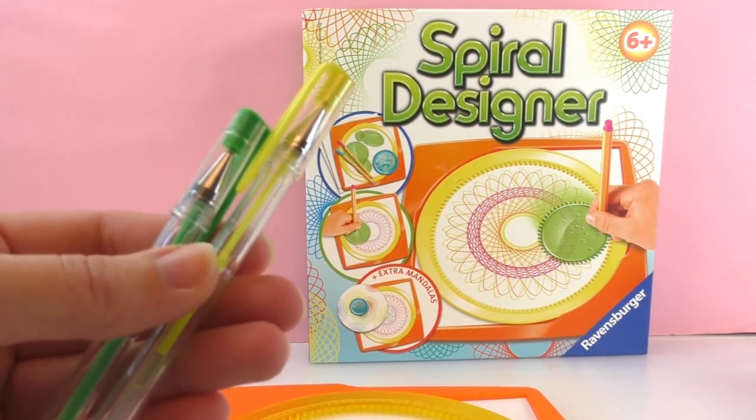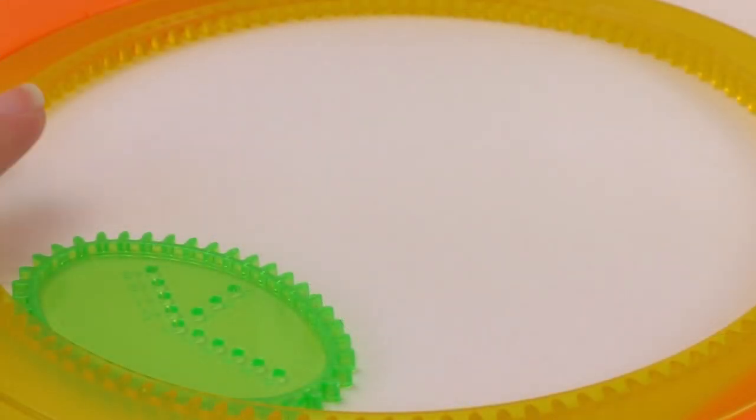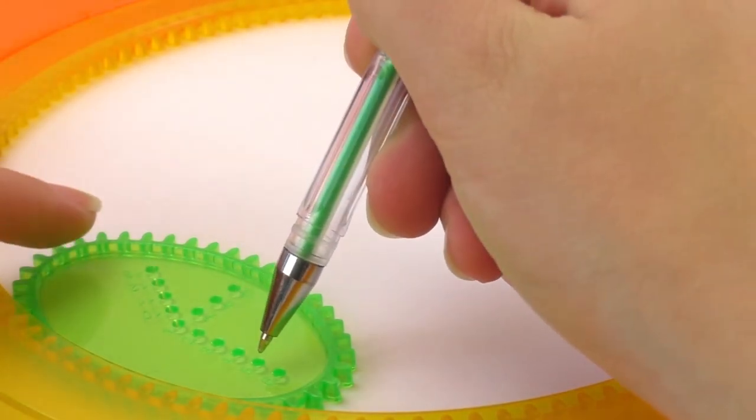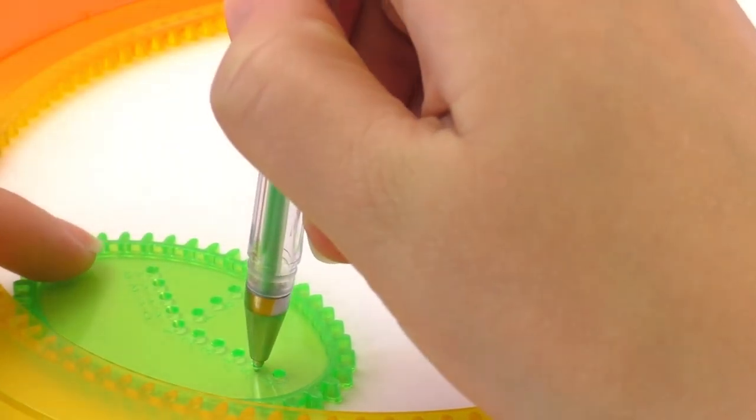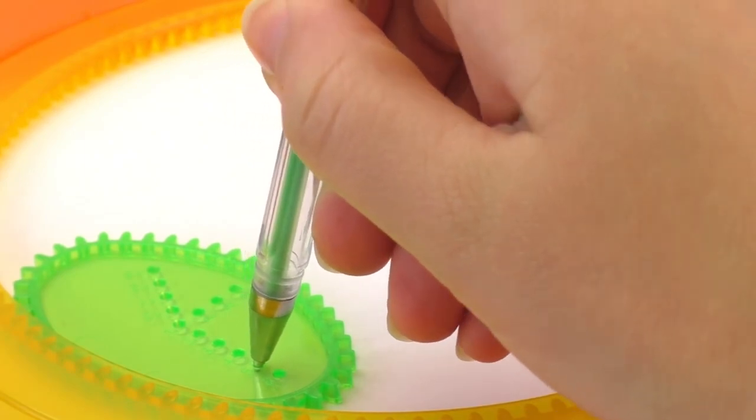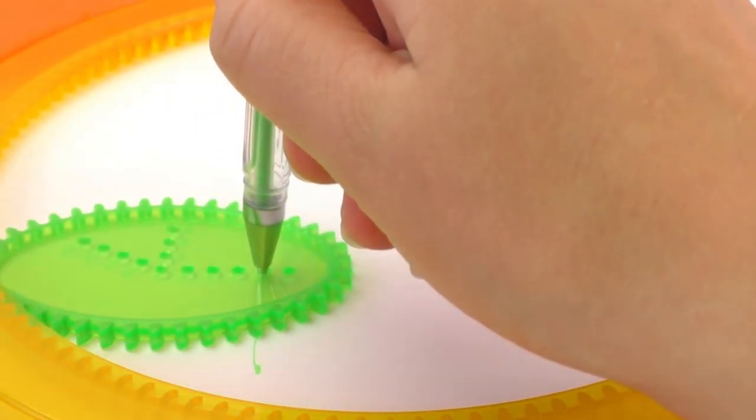And I have colored pens. Okay, so I'm going to start with the oval and I'm going to put my pen in hole number five. They are numbered, so that's good. And I'm going to start going in this direction.